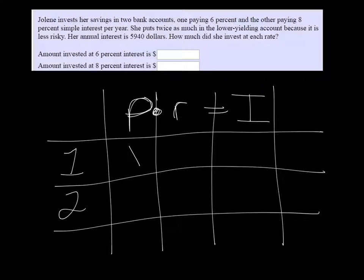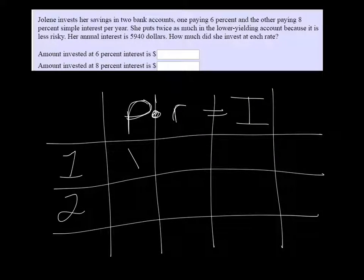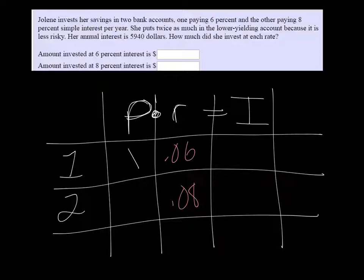One pays 6% and the other 8%, so we can put that in. 0.06 and 0.08. We're putting those under the rate columns and changing them to a decimal. And we know the total interest was $5,940.